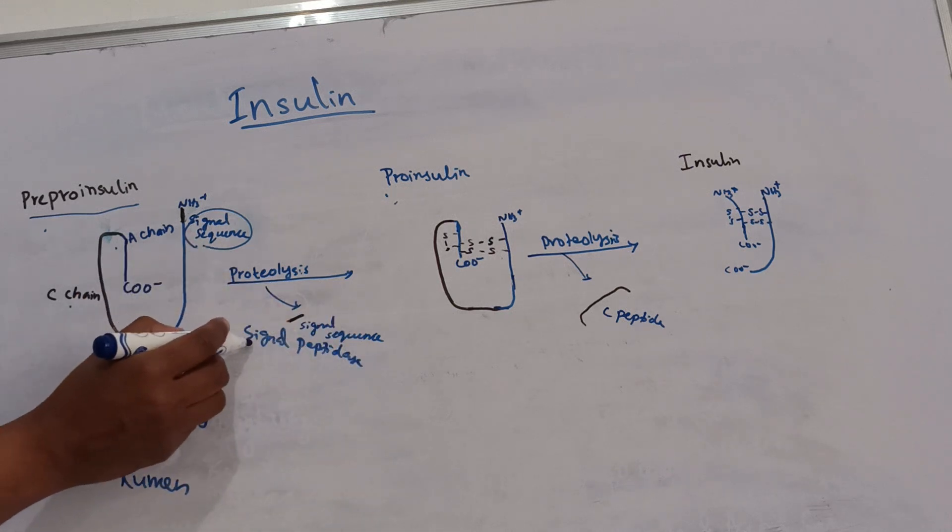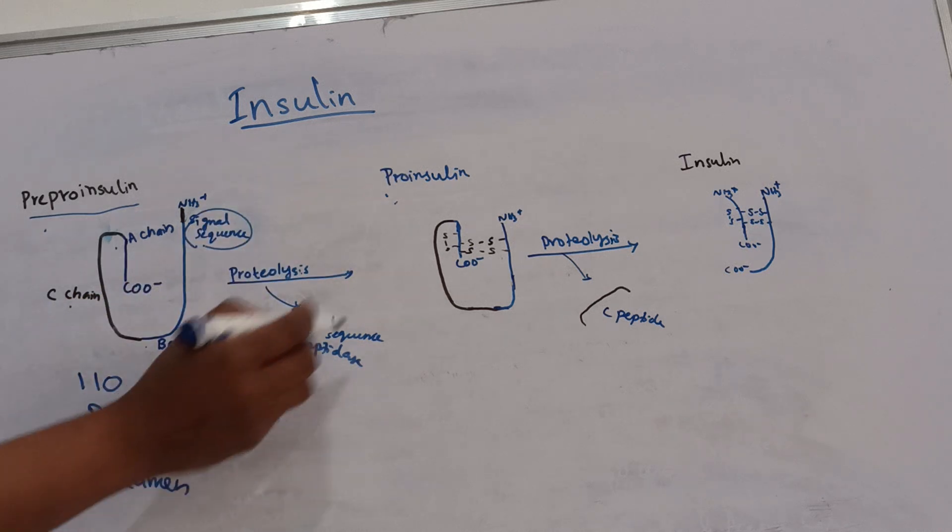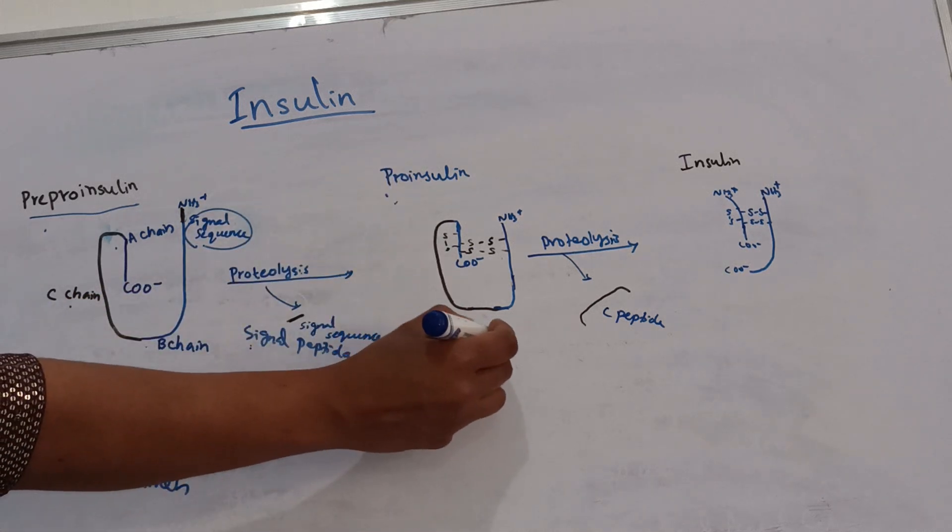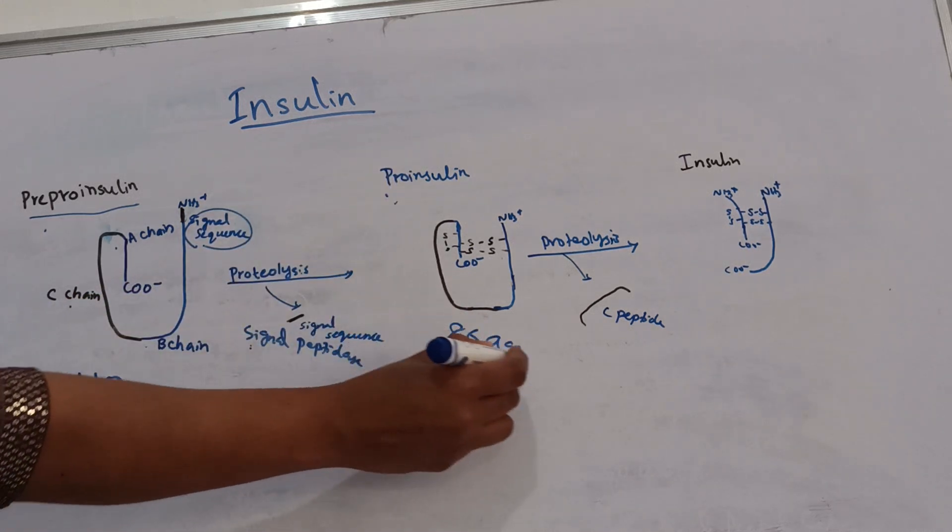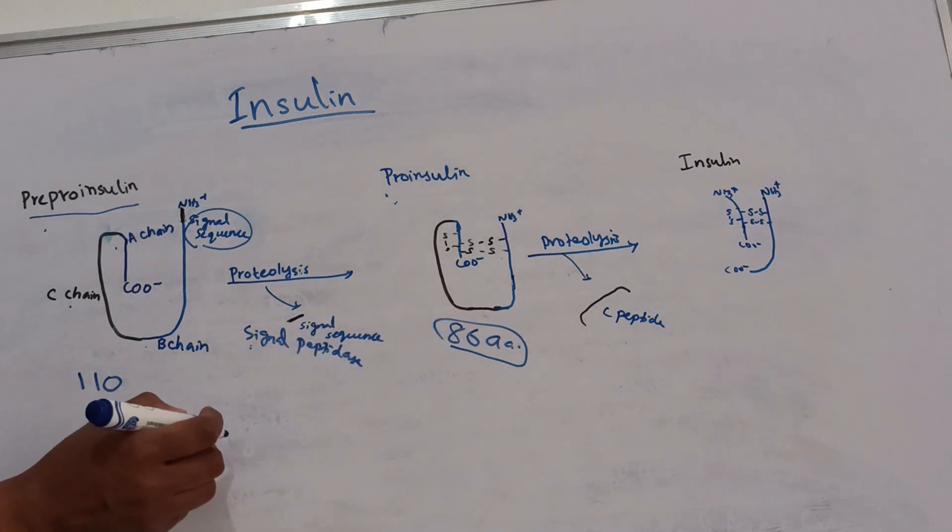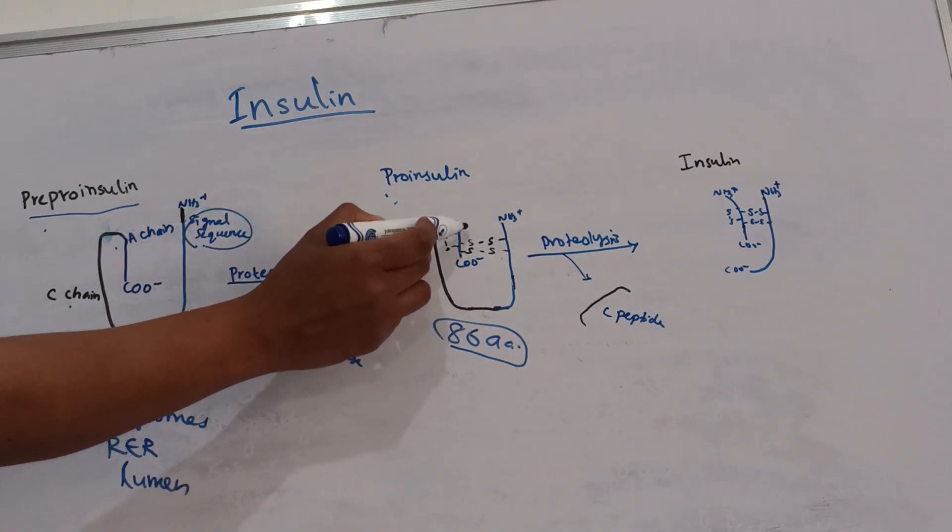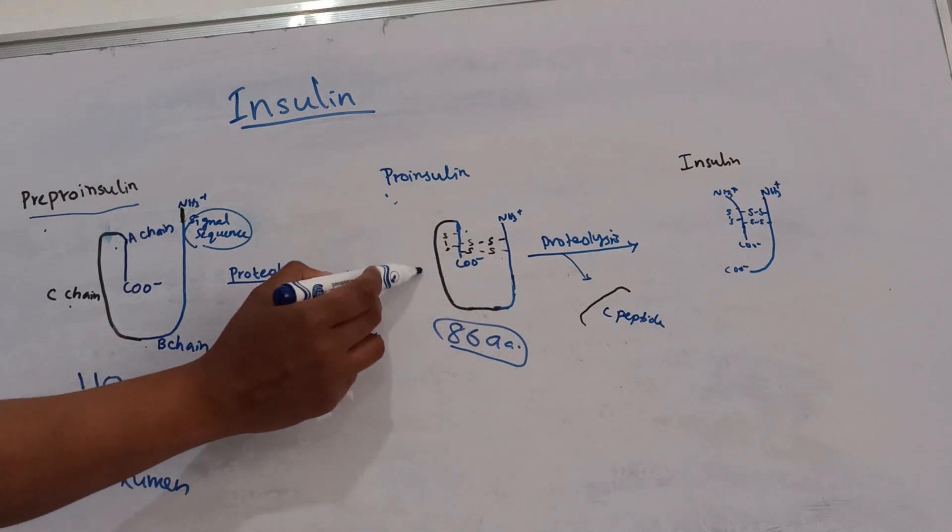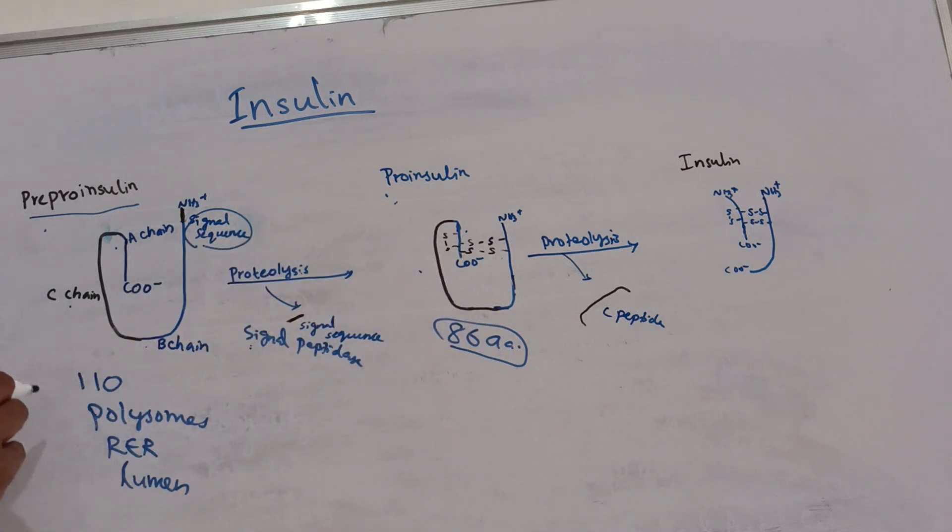This forms proinsulin which has 86 amino acids. This proinsulin consists of A chain, B chain and C chain or a C peptide.